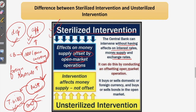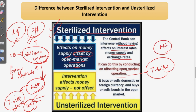In the case of a depreciating currency, the central bank buys its own currency to create artificial demand, which reduces money supply. The government can then purchase T-bills from the market to restore liquidity. In sterilized intervention, the central bank buys or sells domestic or foreign currency and buys or sells bonds in the open market depending on whether the currency is depreciating or appreciating.